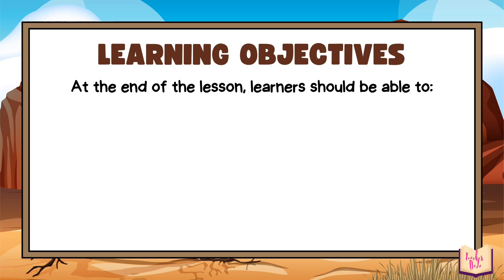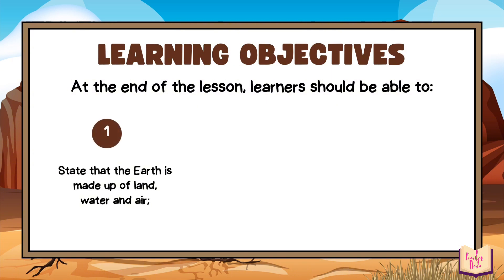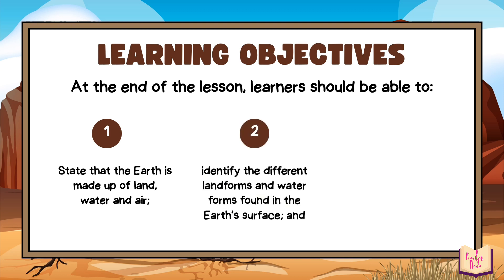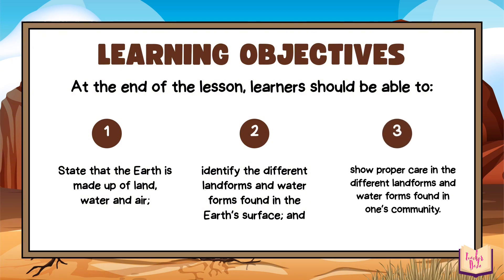At the end of the lesson, the learners should be able to: First, state that the Earth is made up of land, water, and air. Second, identify the different landforms and water forms found in the Earth's surface. And third, show proper care in the different landforms and water forms found in one's community.